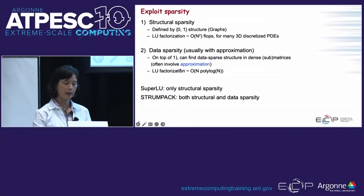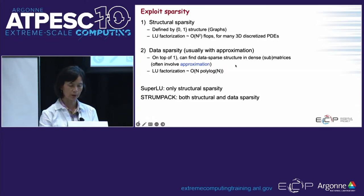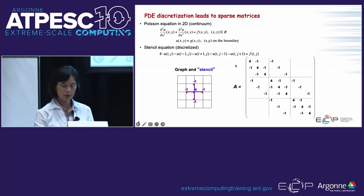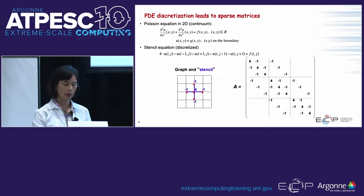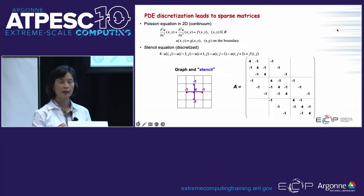For the two packages we are discussing today: SuperLU only exploits structural sparsity — it's in that camp. STRUMPACK has the advantage of combining both — it can do both structural and data sparsity. I'll spend a few minutes talking about the data structure and why sparse matrices come from certain patterns and how we can exploit that.